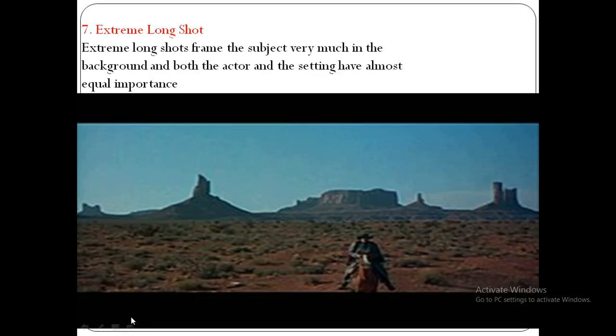The next type of cinematography shot is the extreme long shot. Extreme long shots frame the subject very much in the background, and both the actor and the setting have almost equal importance. Such a shot is used to highlight the location for the scene. It is also called an establishment shot, where the frame is dominated by a landscape or a setting in which the object is barely visible.